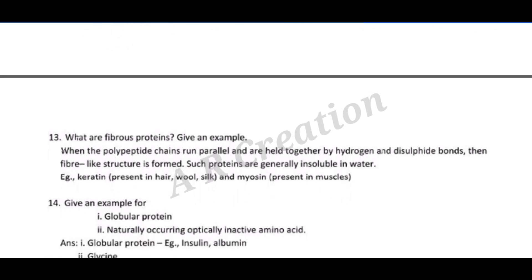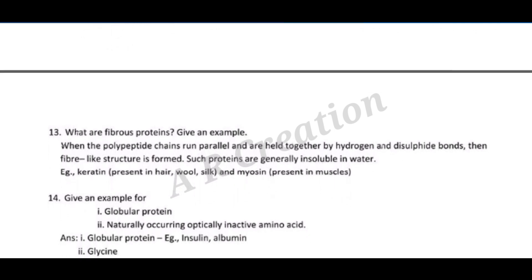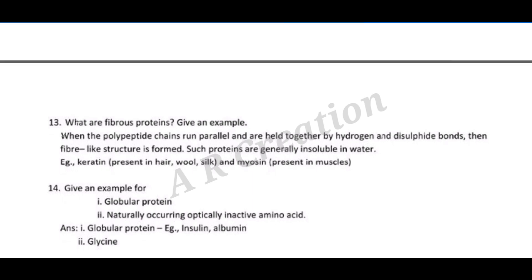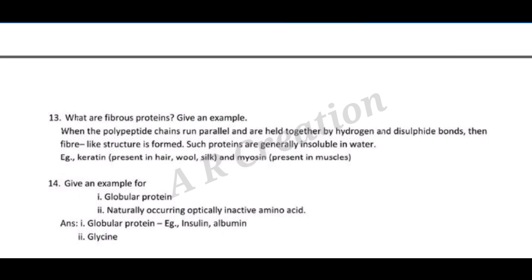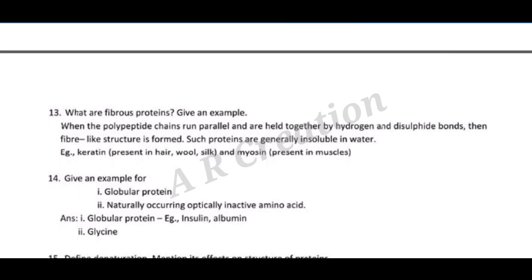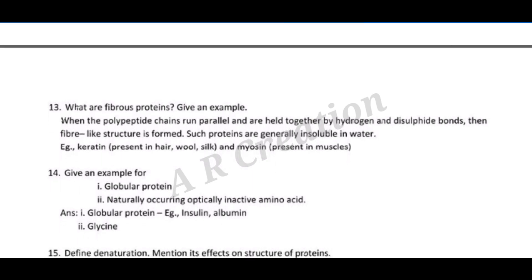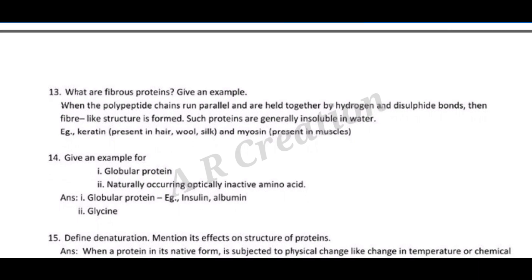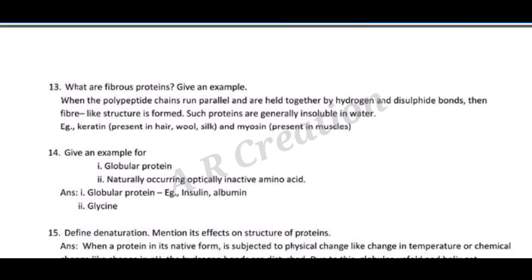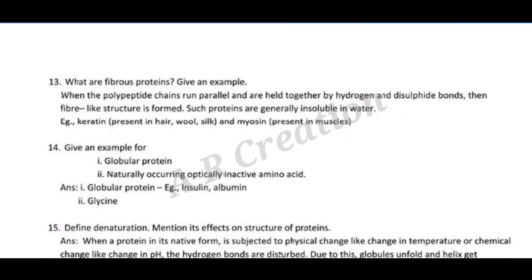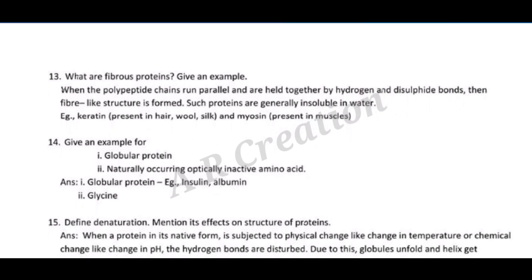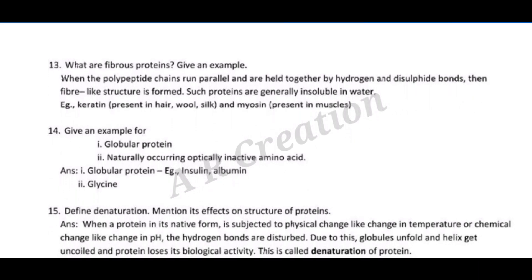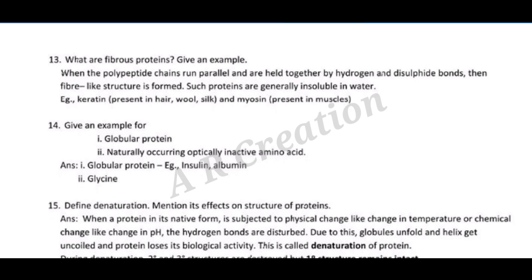Examples of fibrous proteins: keratin, present in hair, wool, and silk; and myosin, present in muscles. Question fourteen: give an example each for (i) a globular protein and (ii) a naturally occurring optically inactive amino acid. Answer: (i) globular protein — insulin or albumin.